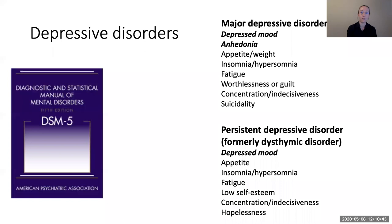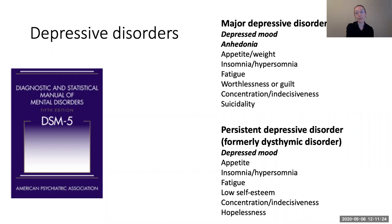For major depressive disorder, the key symptoms are depressed mood and anhedonia — that lack of interest or pleasure I mentioned. To receive a diagnosis, a person needs to be experiencing at least one of those two symptoms. For persistent depressive disorder, formerly dysthymic disorder in previous DSM versions, there is depressed mood, but typically for a lesser percentage of time, though for a much longer period — at least two years in adults. In both disorders, other domains beyond mood are affected: appetite and sleep disturbances, extremely low energy, feelings of worthlessness or guilt, trouble thinking and concentrating, thoughts of death or dying, and some even make plans or attempt suicide.